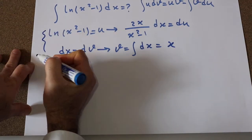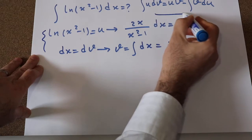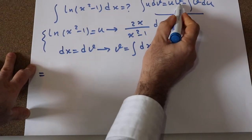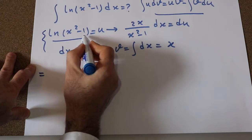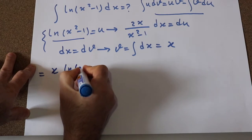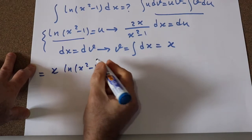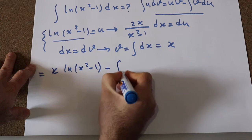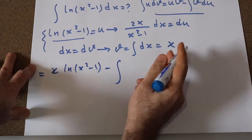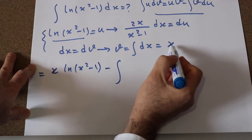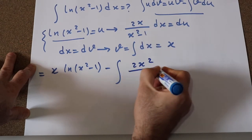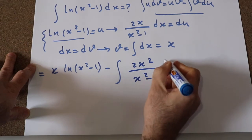Now let's substitute this expression into the formula. Therefore, this integral will be equal to u times v — u is ln(x² - 1) and v is x — so we get x·ln(x² - 1), minus the integral of v·du. v is x and du is 2x/(x² - 1) dx, so x times that will be 2x² divided by (x² - 1) dx.